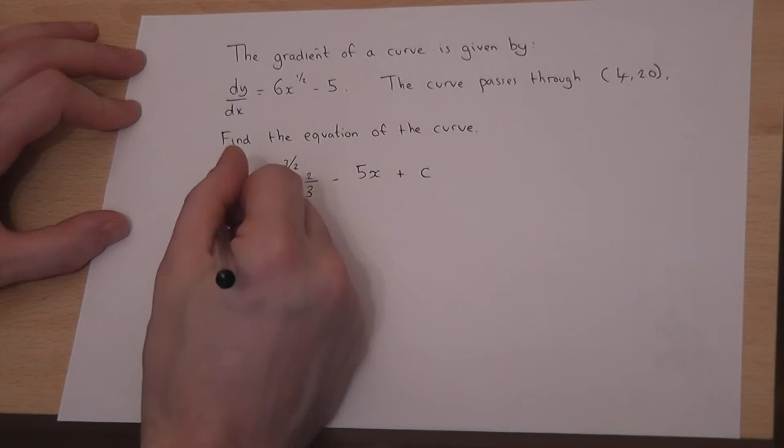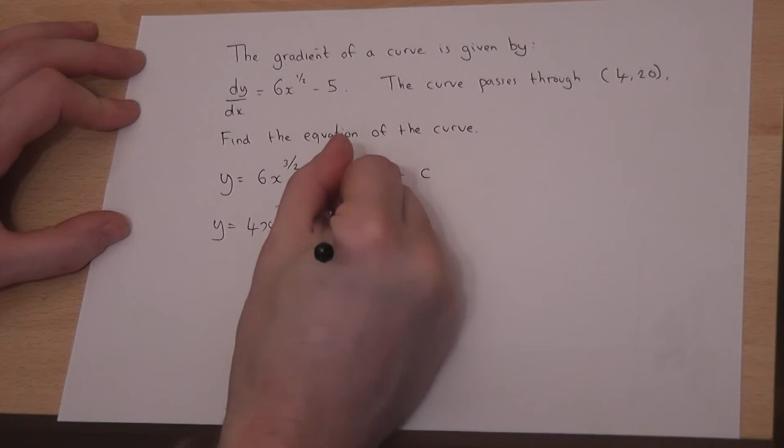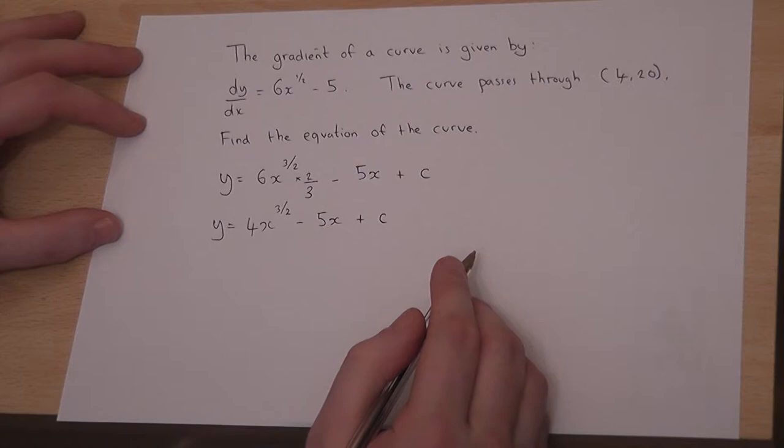But this can be made a bit more simple. Because if I multiply by 2, I get 12, and then divide by 3, I get 4. So it's 4x to the 3 over 2, take away 5x plus c.